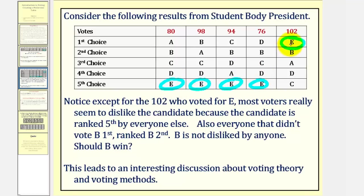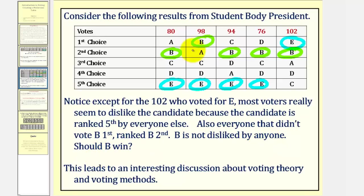If we compare candidate E to candidate B, notice how 98 people voted B as their first choice — only four less than E — but everyone else that didn't vote B first ranked B second. So we could say that B is not disliked by anybody, so maybe that means B should win. It's situations like these that lead to interesting discussions about voting theory and voting methods.